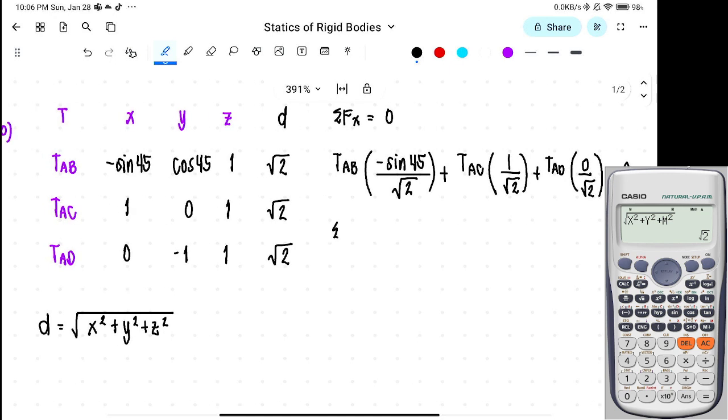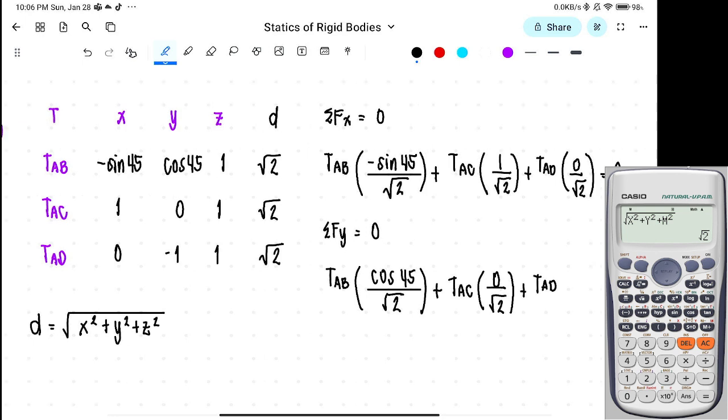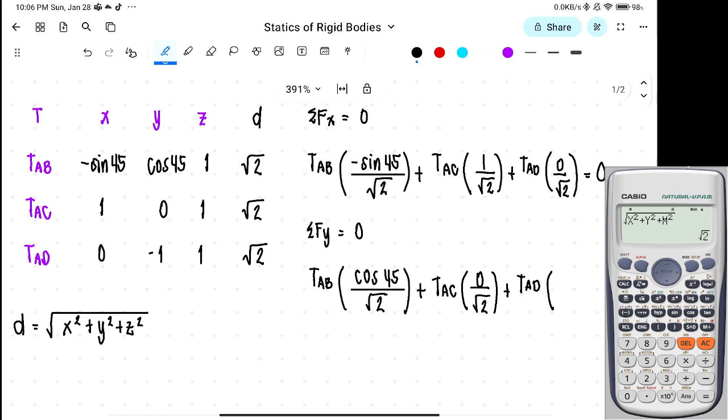Summation of forces along Y equals 0. For tension AB, that is cosine 45 over square root of 2, plus TAC times 0 over square root of 2, plus TAD times negative 1 over square root of 2, equals 0.